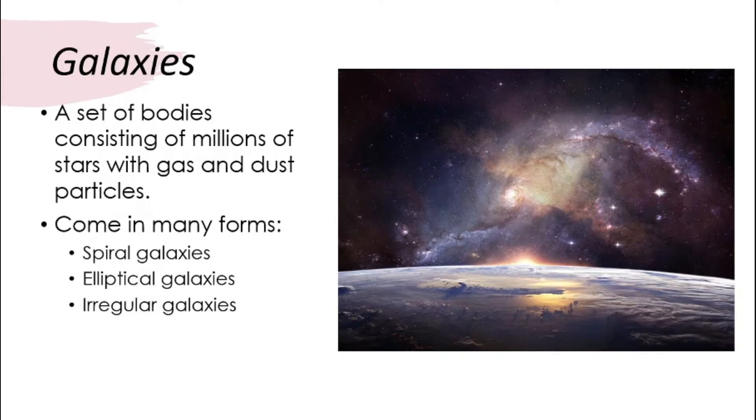Galaxies can come in many forms. The three different forms of galaxies that we'll look into are spiral galaxies, elliptical galaxies, and irregular galaxies. Let's look at some pictures.